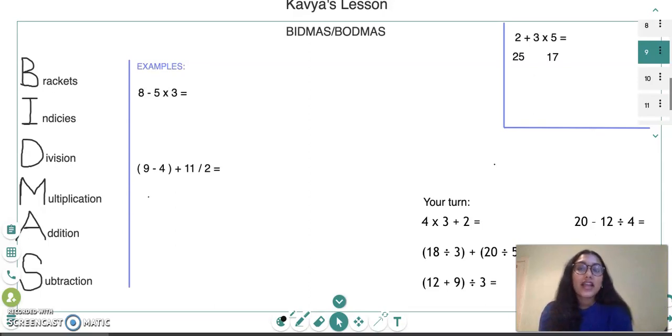The reason BIDMAS or BODMAS is important is because in an equation you may get more than one sort of operation, and it's important to know which operation you have to do first to get the correct answer.